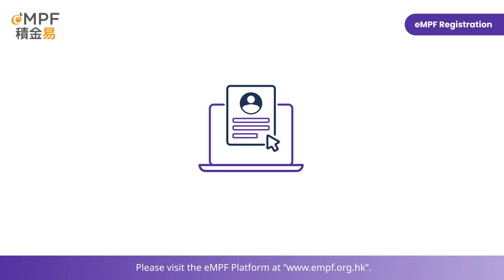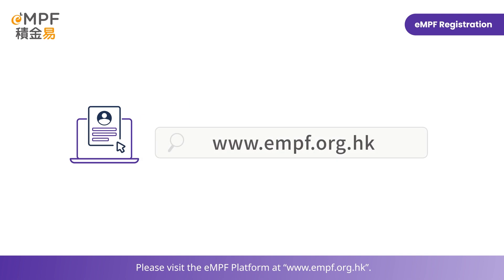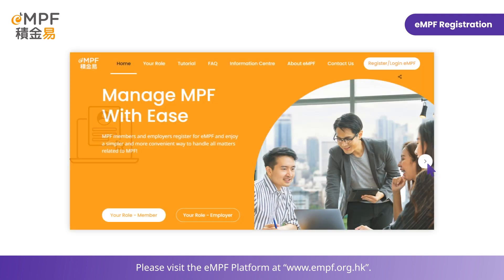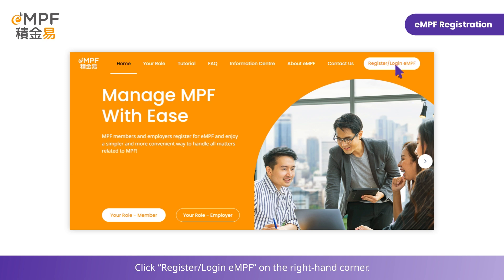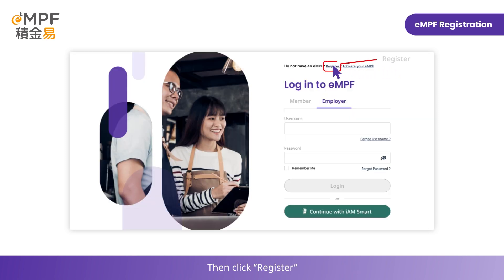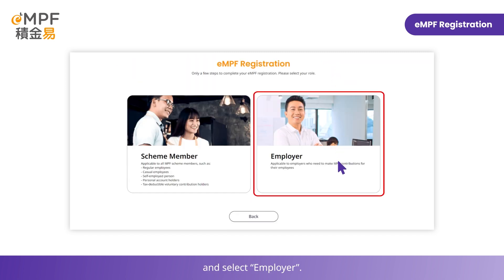Please visit the EMPF platform at www.empf.org.hk. Click Register, then log in to EMPF on the right-hand corner. Then click Register and select Employer.